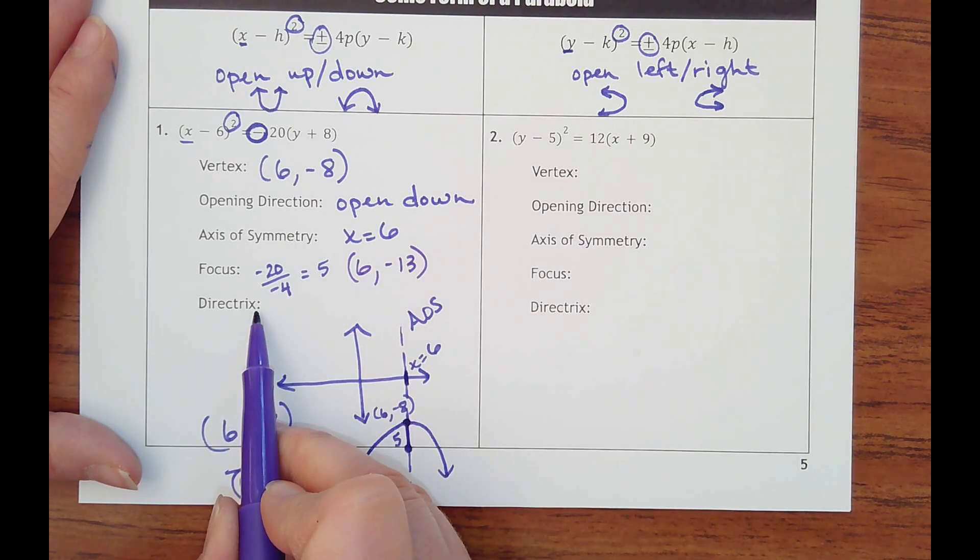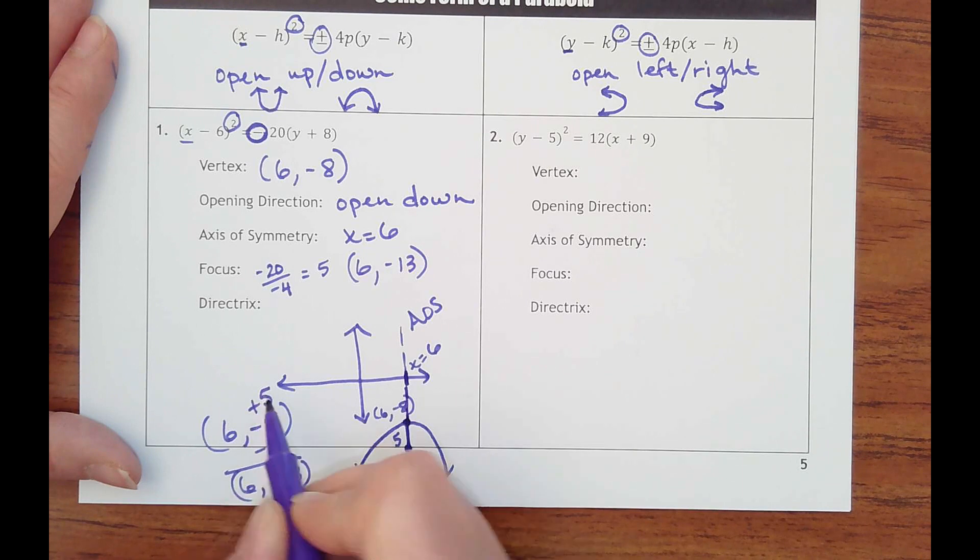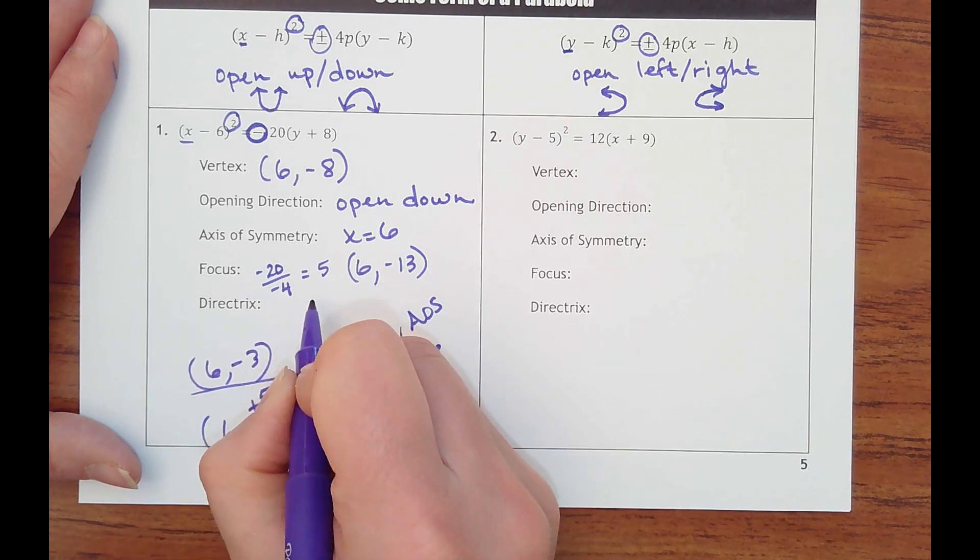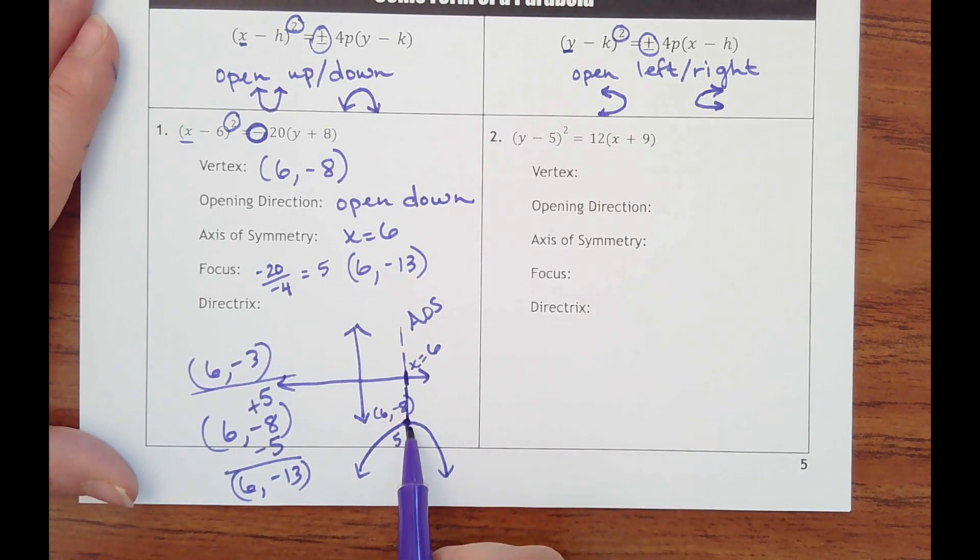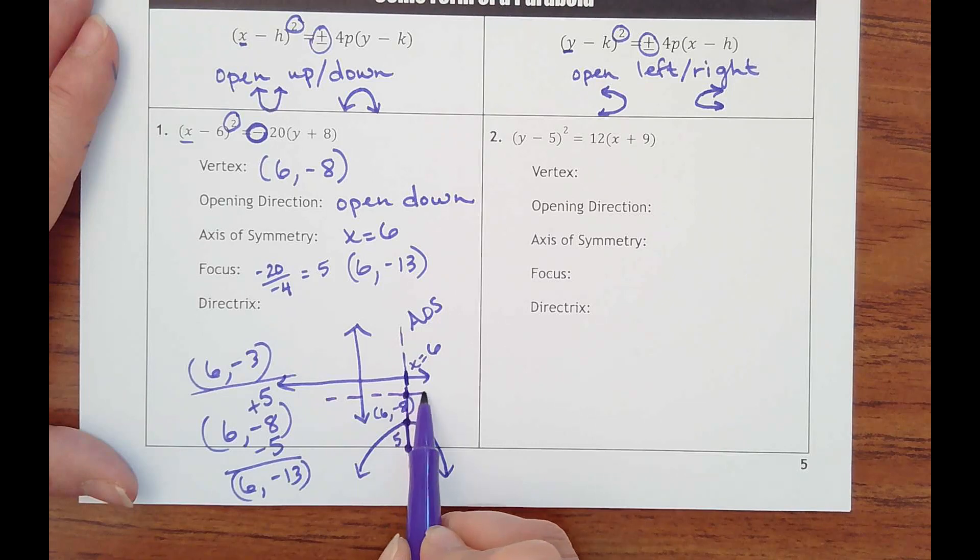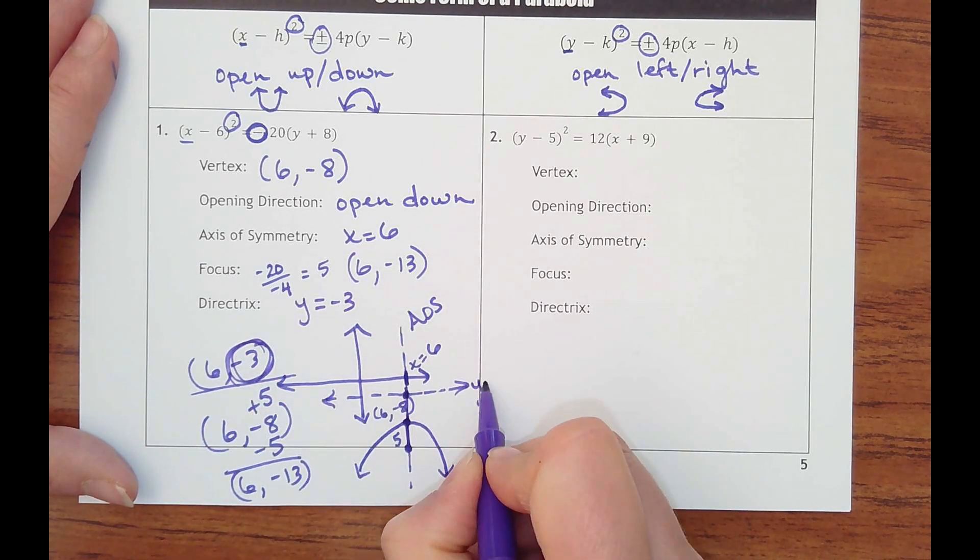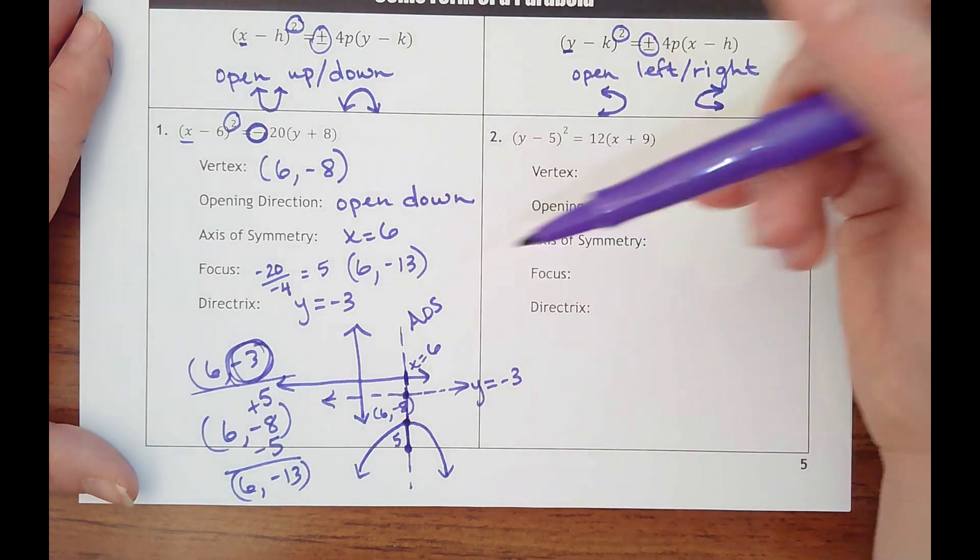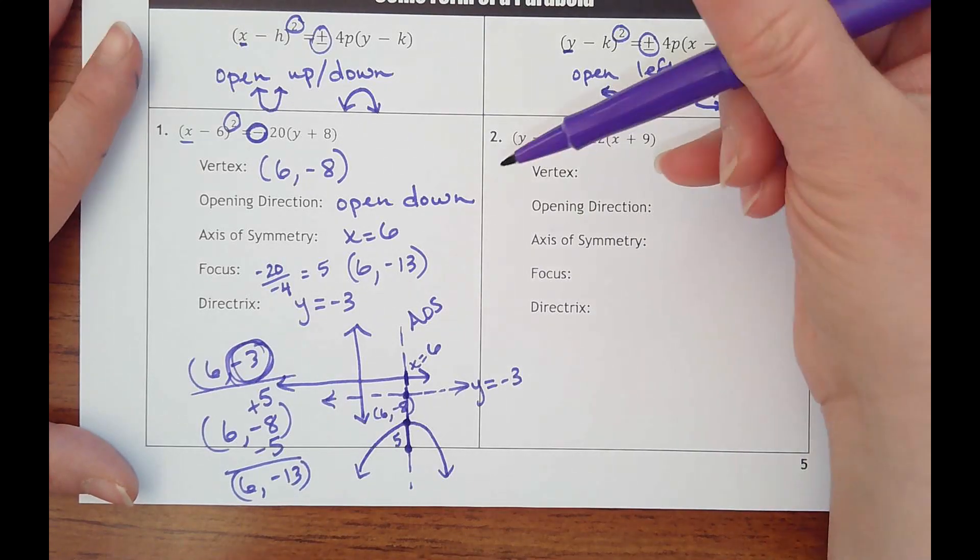Then the directrix is going to be 5 units above it. So I'm going to take the same point and add 5, and negative 8 plus 5 would put me at 6, negative 3. The directrix should be a line. That's going to be right here, and it's horizontal, where all I need to know is the y-value. So it would be y equals negative 3. You will not have to do all of these on one single problem. You'll have only one of these asked at a time.